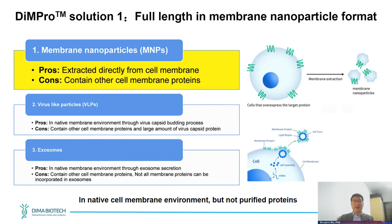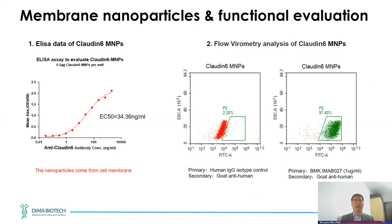Here is an example using our MMP technology to produce nanoparticles for Claudin-6, a four-transmembrane domain protein. The resulting MMPs can be utilized for ELISA, as shown on the left, and also for flow cytometric analysis. The data shows that more than 97% of the vesicles contain our target protein, highly evenly distributed on the cell surface.